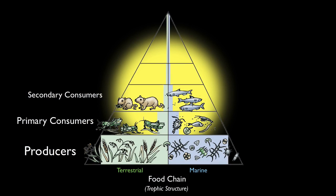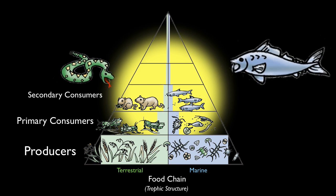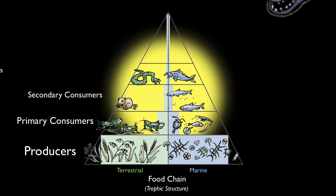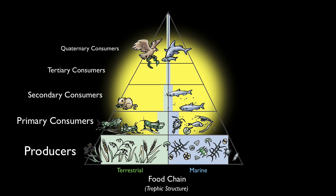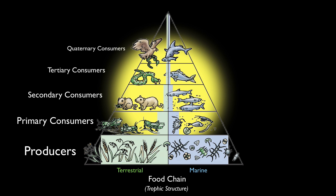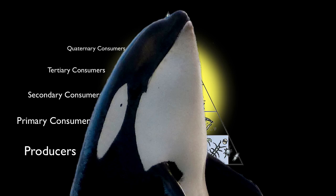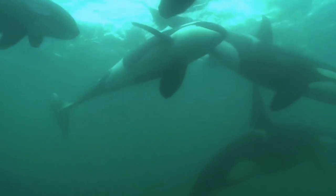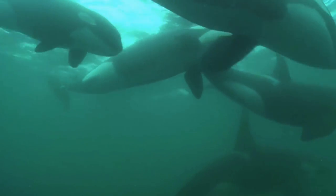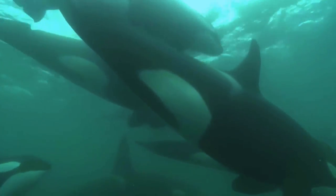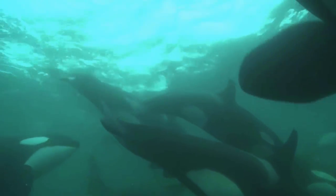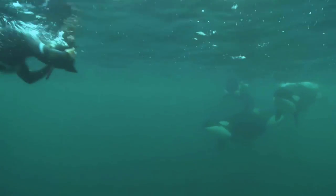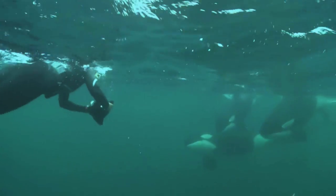In some communities, there may be even higher levels in the food chain. The orca is a good example. In an orca's diet are sharks, who eat sea lions, who eat fish, who eat smaller fish, who eat producers such as photosynthesizing phytoplankton.